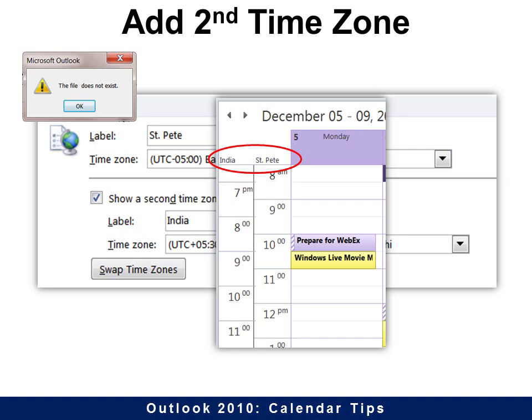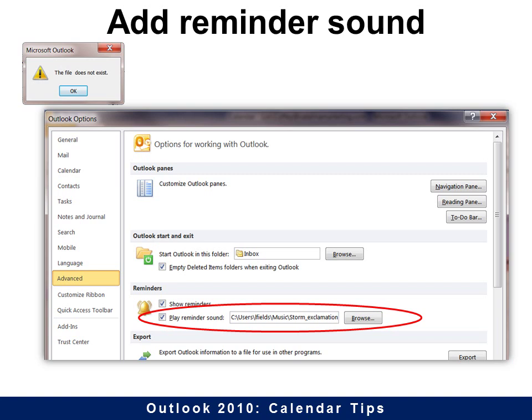If you get the message 'the file does not exist' when you try to use it, it means that you need to add a reminder sound. This is unusual — who would have thought? But I can tell you it works because I had taken off my reminder sound since I use headphones and I never hear the sound anyway. So I had to put in a sound so I could actually see the second time zone.